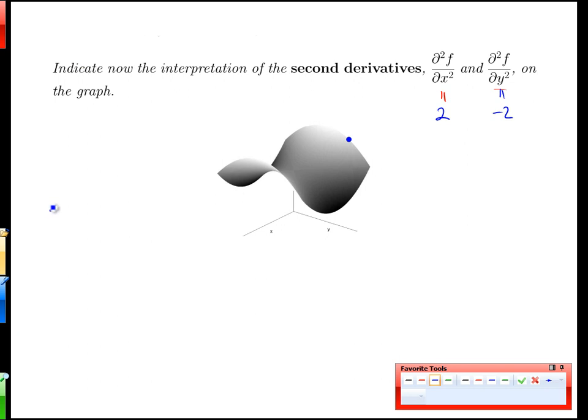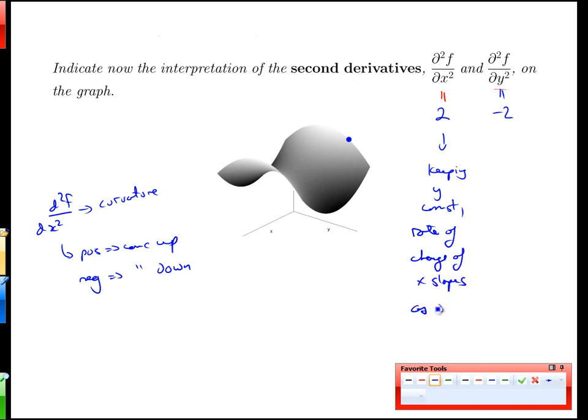Well, think back to our original one variable functions. When we talked about second derivatives of those, we were talking about the curvature of the function. And we talked about the second derivative being positive, meaning concave up, and negative meaning concave down. Does that make sense in this context here? I think it does, because this is keeping y constant. What is the rate of change of the x slopes? This is the rate of change of the x slopes as x increases.